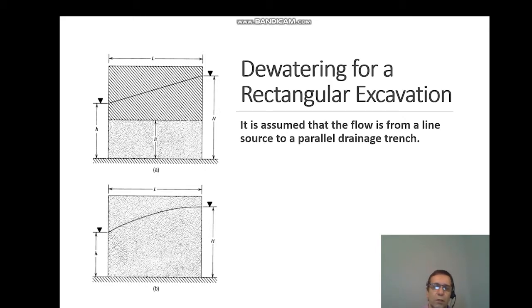In part one, we only talk about dewatering for rectangular excavation. To solve the equation in analytical form, we assume that the flow is from a line source to a parallel drainage trench, where a line source is the groundwater outside of our excavation. The trench water level is actually the water level that we want to reach.